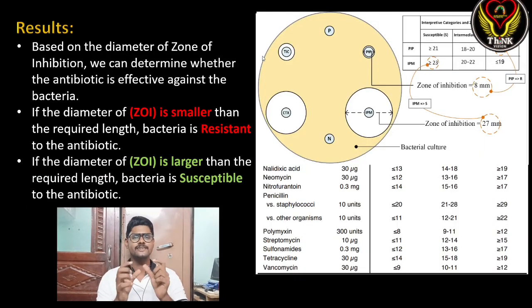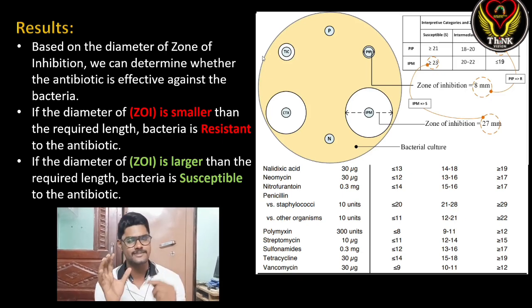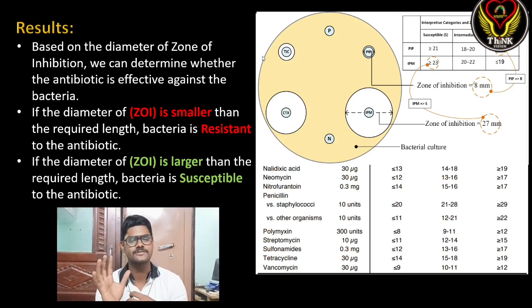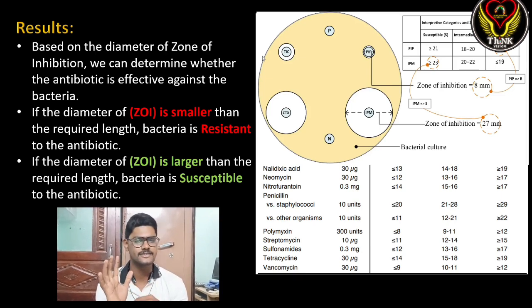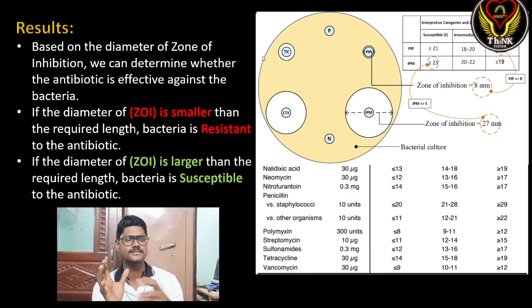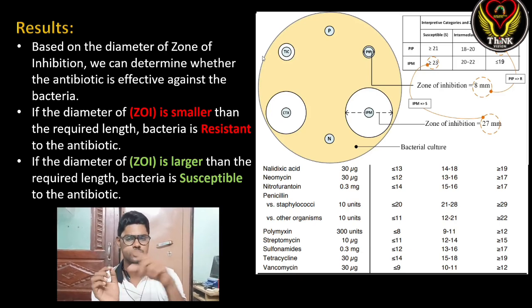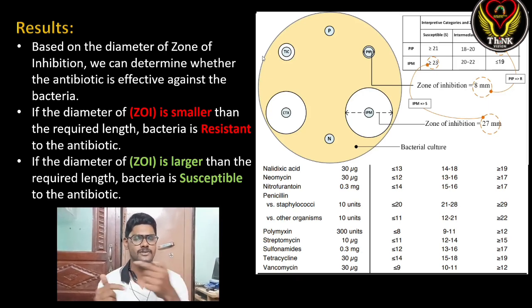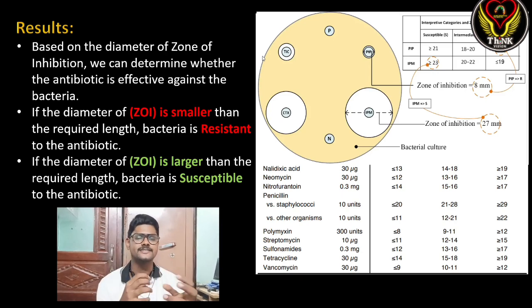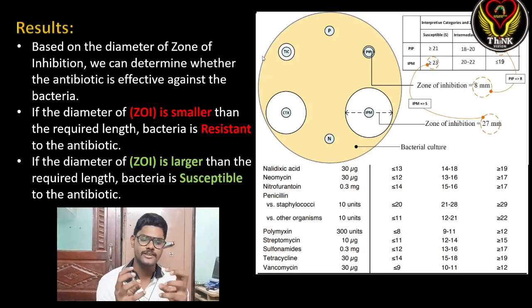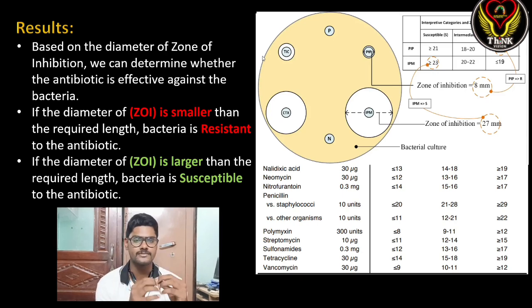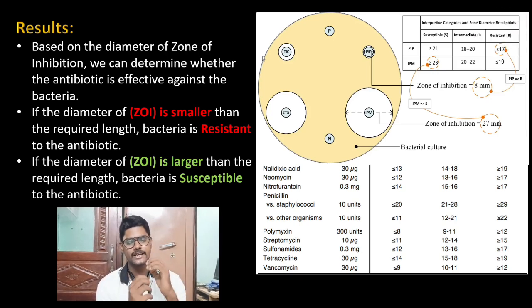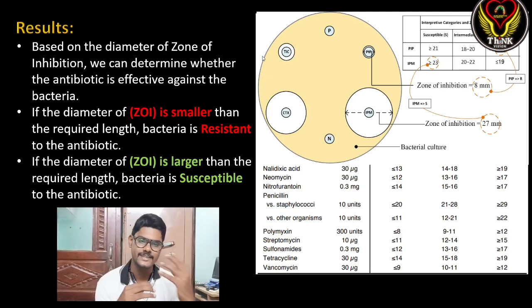Coming to the result part: we measure the diameter of the zone of inhibition. The zone of inhibition is a circle around the antibiotic disc where the bacteria do not grow. In the picture you can see the yellow color is the bacterial growth, and near the disc there is no growth — that circle is the zone of inhibition. We compare the diameter against a standard chart for each antibiotic. If the diameter is smaller than the required length, the bacteria is resistant to the antibiotic.